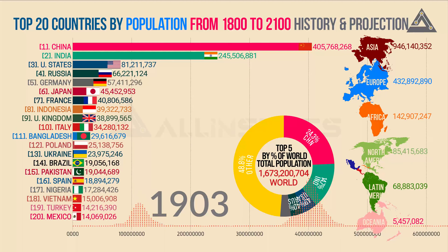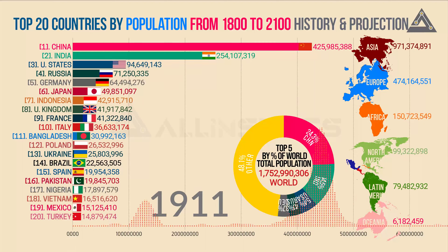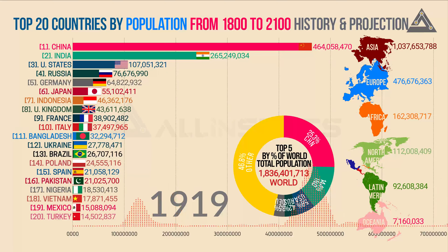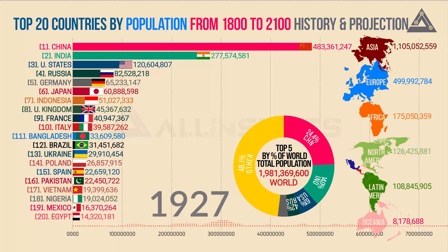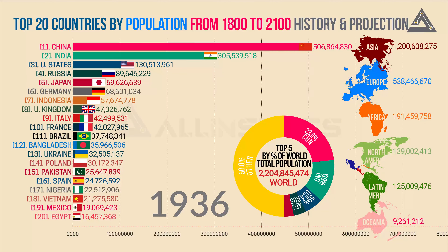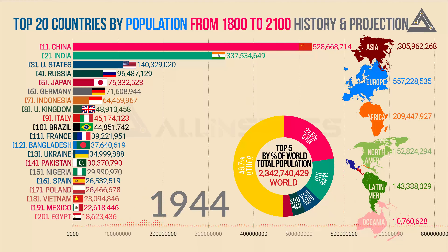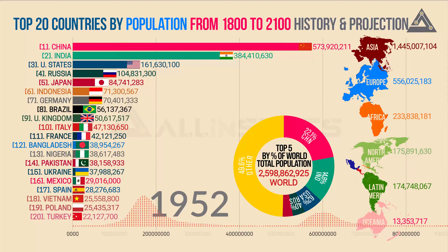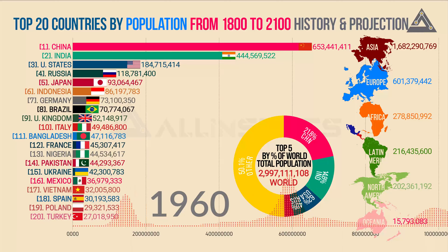Number two: child and infant mortality. Child mortality refers to the death of children under the age of five, and infant mortality refers to the death of children under the age of one. Mortality at a young age has a particularly big impact on demographic change. Before the modern era, a quarter of all children died in the first year of life and almost half died before reaching the end of puberty. From 1800 to 1950, global child mortality halved from 43 percent to 22.5 percent.